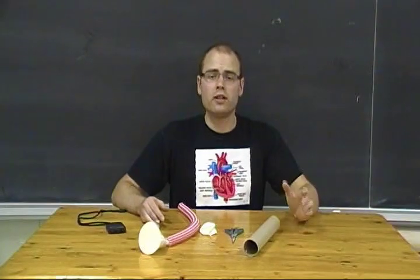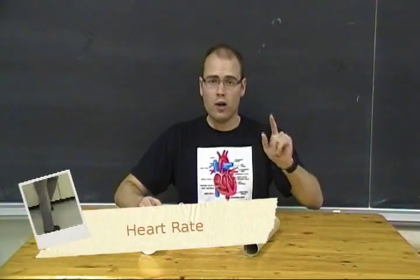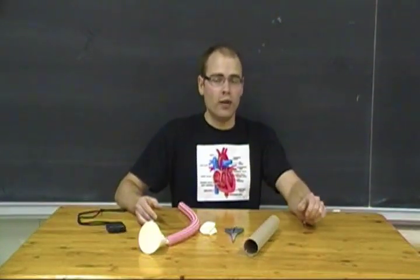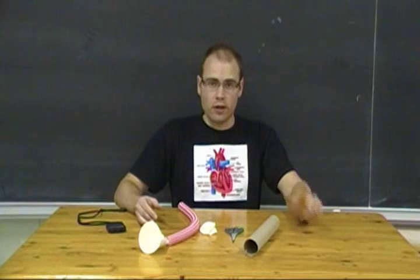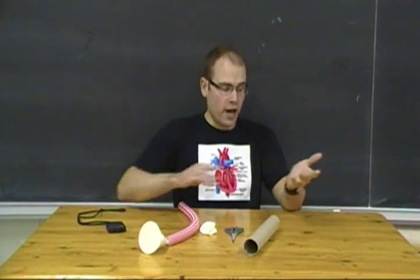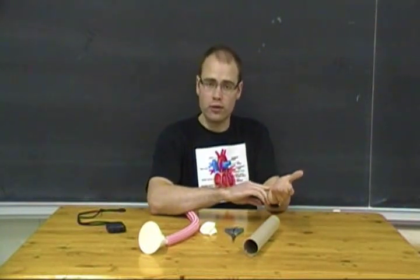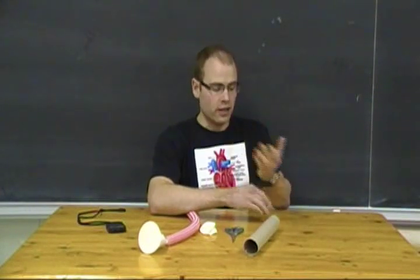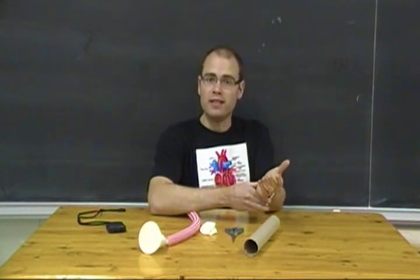Next we are going to be dealing with matters of the heart. We might start off using an inquiry driven question such as what happens to the heart when we exercise. Before you start that activity, you might practice taking your pulse with your students. You could do that at the wrist, maybe at the neck here. They could count how many beats they feel in 15 seconds and then multiply that by four, and that is what will give them their beats per minute.